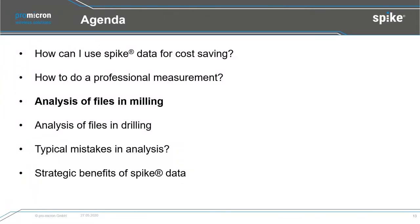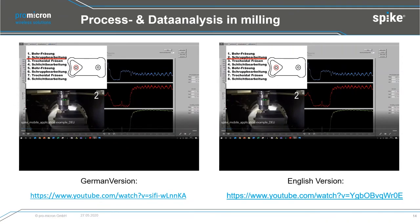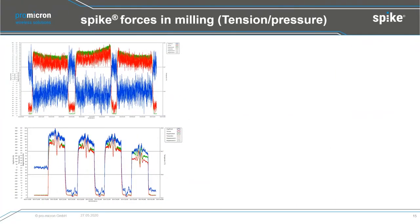Now I'd like to go into process analysis and analysis functions in milling. We will send you this presentation, which includes a YouTube link to a video made by our application engineer showing different machining effects in detail — it's 10 minutes long and worth watching. How do forces look in milling? We have three colors: blue is the actual force, red is the torque, and green is the bending moment.